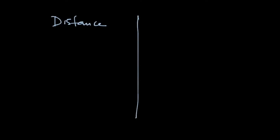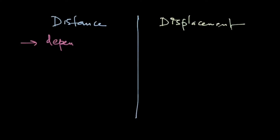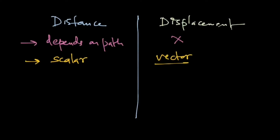Let's look at the differences between distance and displacement. The first difference: distance depends on path, whereas displacement does not depend on path. The second difference: distance is a scalar quantity, whereas displacement has a direction, so it is a vector quantity.